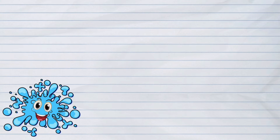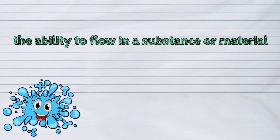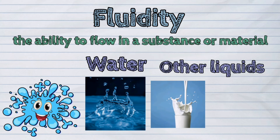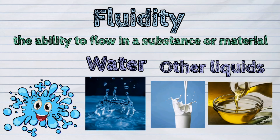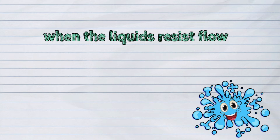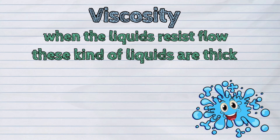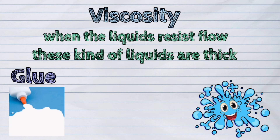Liquids also have special properties. The ability of a liquid to flow in a substance or material is called fluidity. Water and other liquids flow, but some liquids resist flow. This property of liquid is called viscosity. These kinds of liquids are thick. Examples are glue and condensed milk.